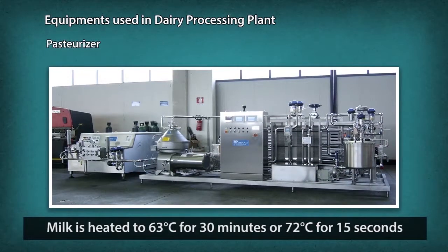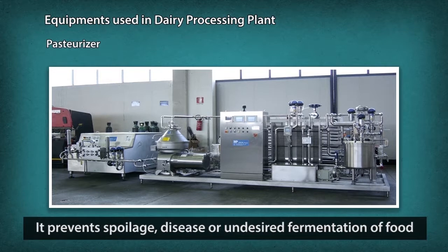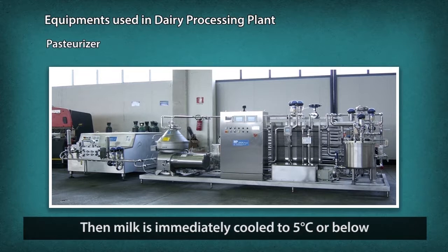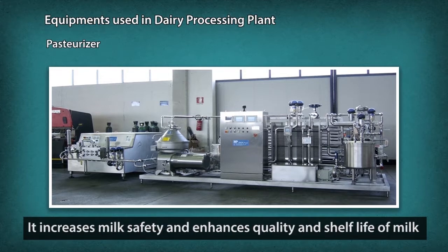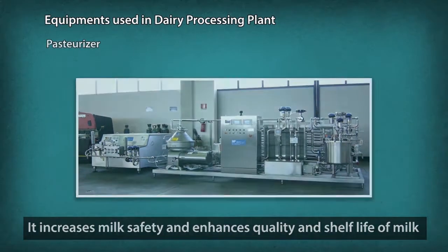Pasteurization of milk is the process of heating milk to 63 degrees centigrade for 30 minutes, or 72 degrees centigrade for 15 seconds, in order to kill microorganisms that could cause spoilage, disease or undesired fermentation of food. After pasteurization, the milk is immediately cooled to 5 degrees centigrade or below. The purpose of pasteurization is to increase milk safety for consumers and to enhance the quality and shelf life of milk products.